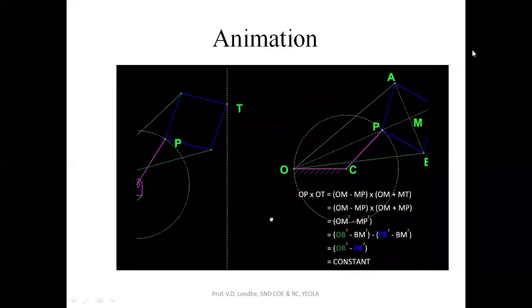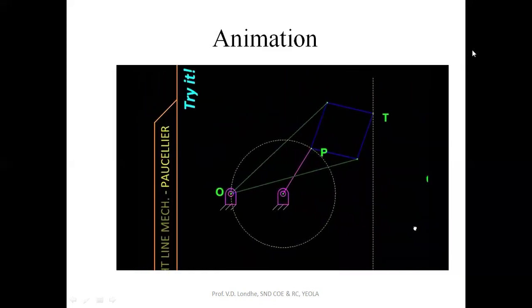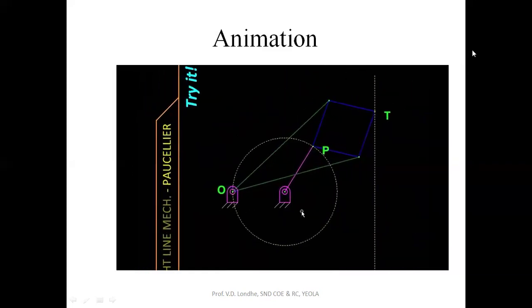T will be the tracing point for the exact straight line mechanism. Let us see this in its physical form. This is the mechanism we derived from the geometry we just saw. We are going to drag point P which moves on a circle, and you can notice its image T is tracing the exact straight line. Of course, we'll get only a segment because this mechanism has links of finite lengths, so we get only a part of that infinite straight line.